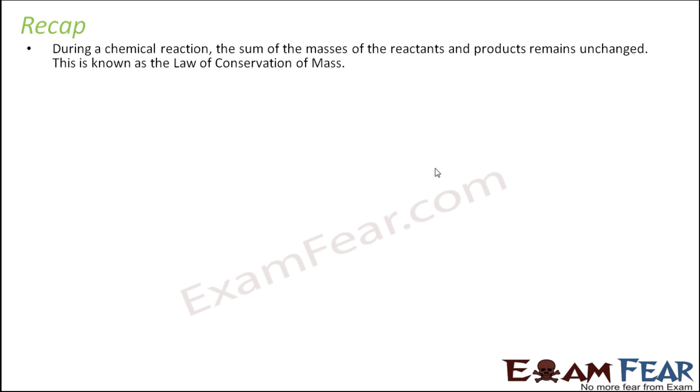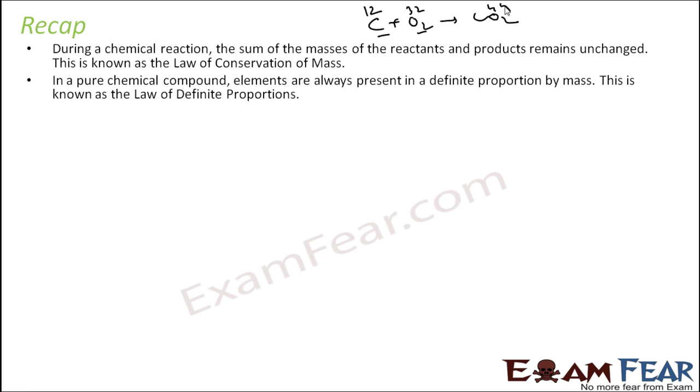Let's do a recap of what we have done and after that we'll do some numericals. We have seen that during a chemical reaction, the sum of the mass of reactants and products remains the same. We have seen that carbon plus oxygen equals carbon dioxide. For example, 12 grams of carbon and 32 grams of oxygen were used to produce 44 grams of carbon dioxide. When all the reaction happened, the mass of reactant and mass of product is always the same. This is the law of conservation of mass.